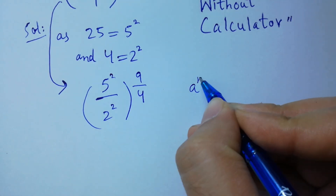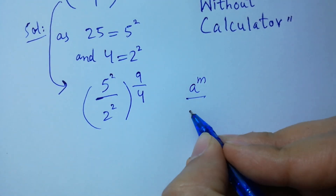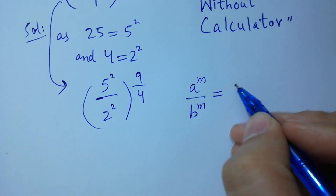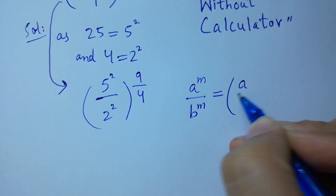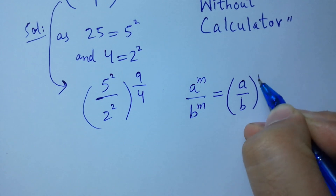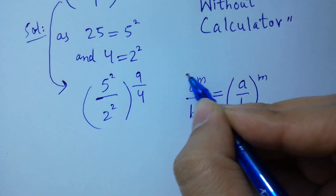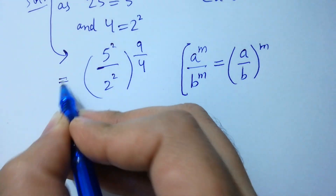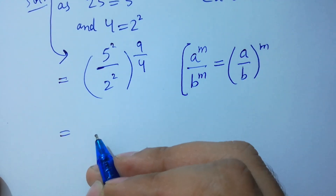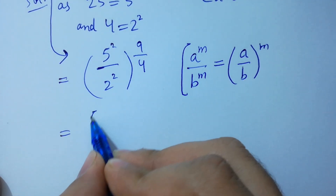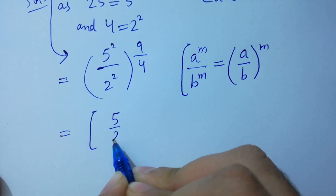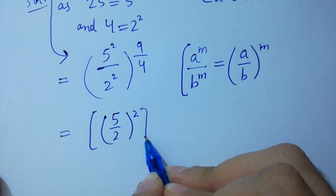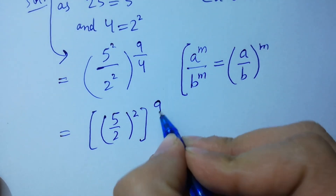Using the rule: a^m / b^m = (a/b)^m, so we have (5/2)² to the whole power 9/4, which gives us (5/2) to the whole power 9/2.